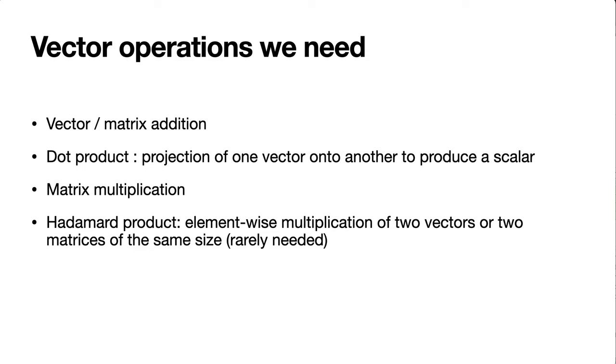We're going to use the dot product a lot. The dot product is the projection of one vector onto another and the output is a scalar number. We're going to talk about matrix multiplication and the Hadamard product, which we're going to need rarely. If we have two vectors, we can multiply them element-wise and get an output the same size where the first element of the output is the first element of vector a multiplied by the first element of vector b, and so forth. We'll talk about Hadamard product again when we need it, but it's going to be rarely used in general.